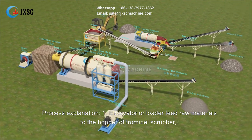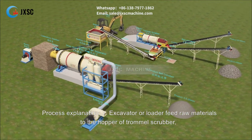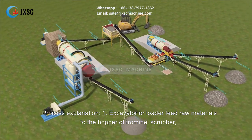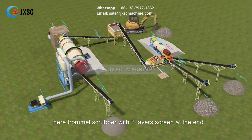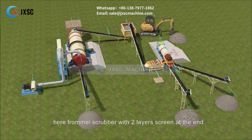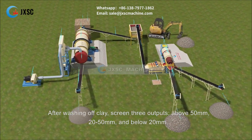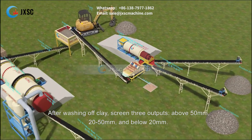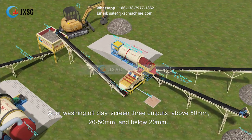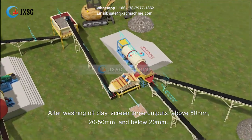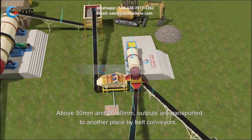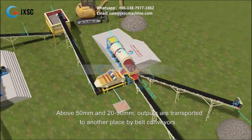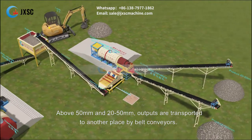Process explanation: 1. Excavator or loader feeds raw materials to the hopper of the trommel scrubber. The trommel scrubber has a 2-layer screen at the end. After washing off clay, it screens 3 outputs: above 50 mm, 20-50 mm, and below 20 mm. The above 50 mm and 20-50 mm outputs are transported to another place by belt conveyors.